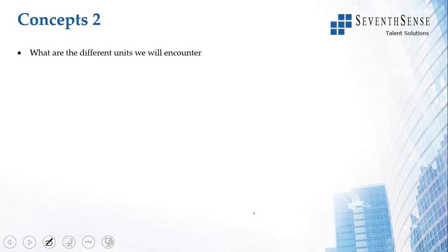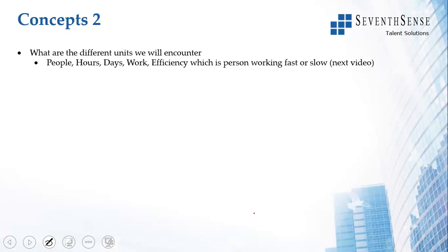Now, what are the different units we will encounter in a typical time and work problem? You will encounter people — different numbers of people — you will encounter them working for different numbers of days, you will encounter them working for different numbers of hours, the quantity of work done might be different, and then there is efficiency. Efficiency is about how fast or slow people are. This particular topic — efficiency — we will look at in a subsequent video. So the common units you will encounter are: people, work, hours, days, efficiency.